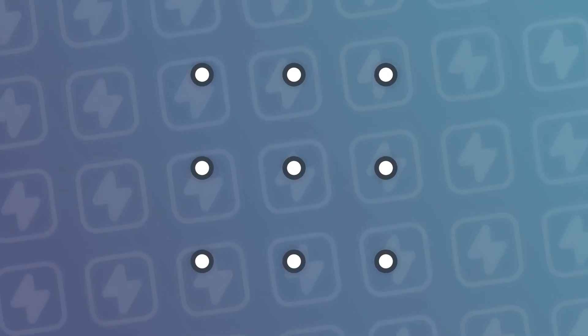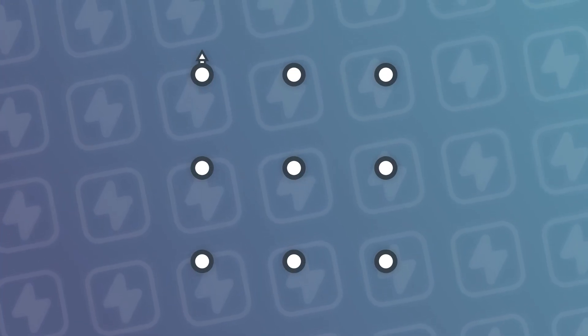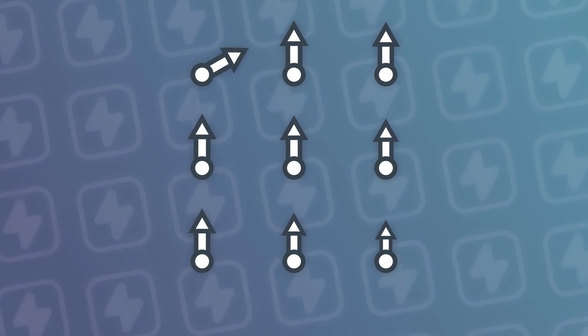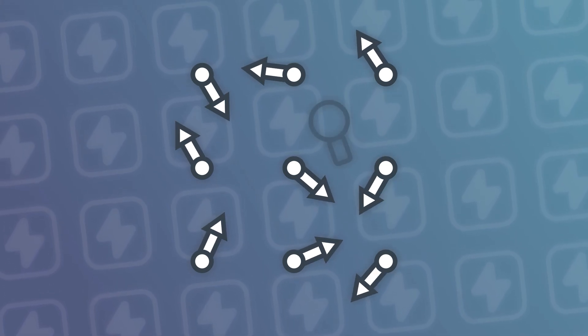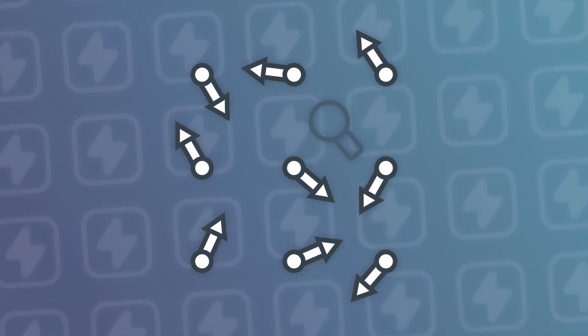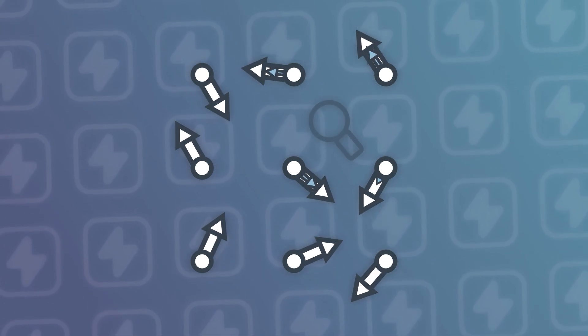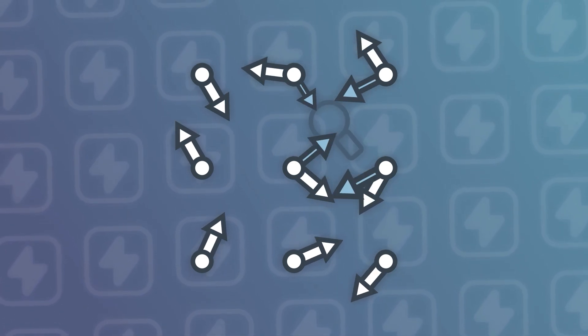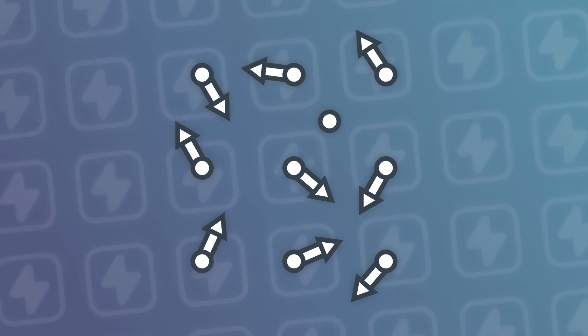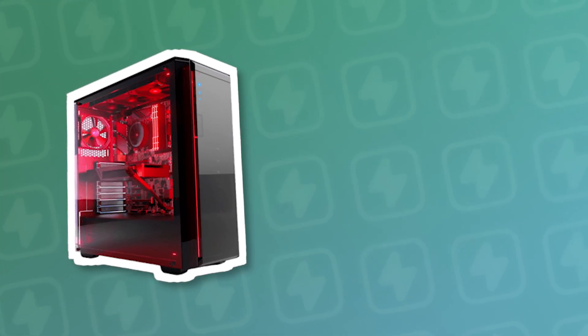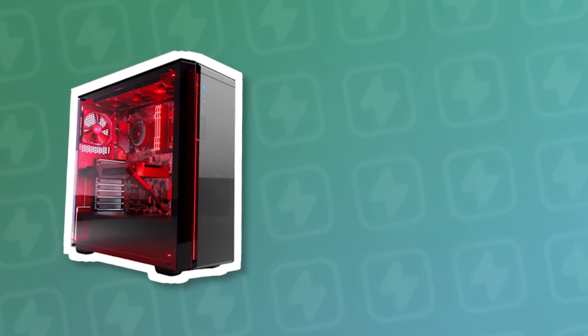Imagine a grid of points where each point has a random direction vector. For any position, you calculate its influence from nearby vectors, then blend it smoothly. With Perlin noise working, it was time to map it into a world.